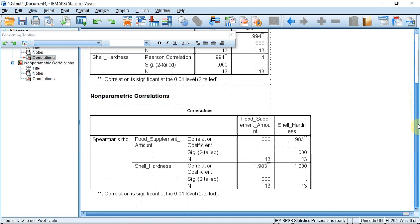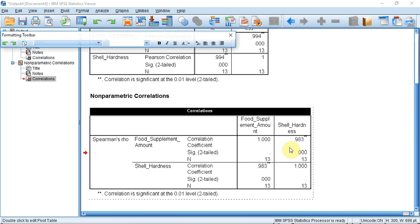The Spearman's rank data is summarized in the other box and we can see that it gives us the same two figures. In this case the correlation coefficient is 0.983 and the significance again is below 0.01. We can also double click on this box hover over the probability to get the exact probability which in this case is 1.6775 times 10 to the minus 9.